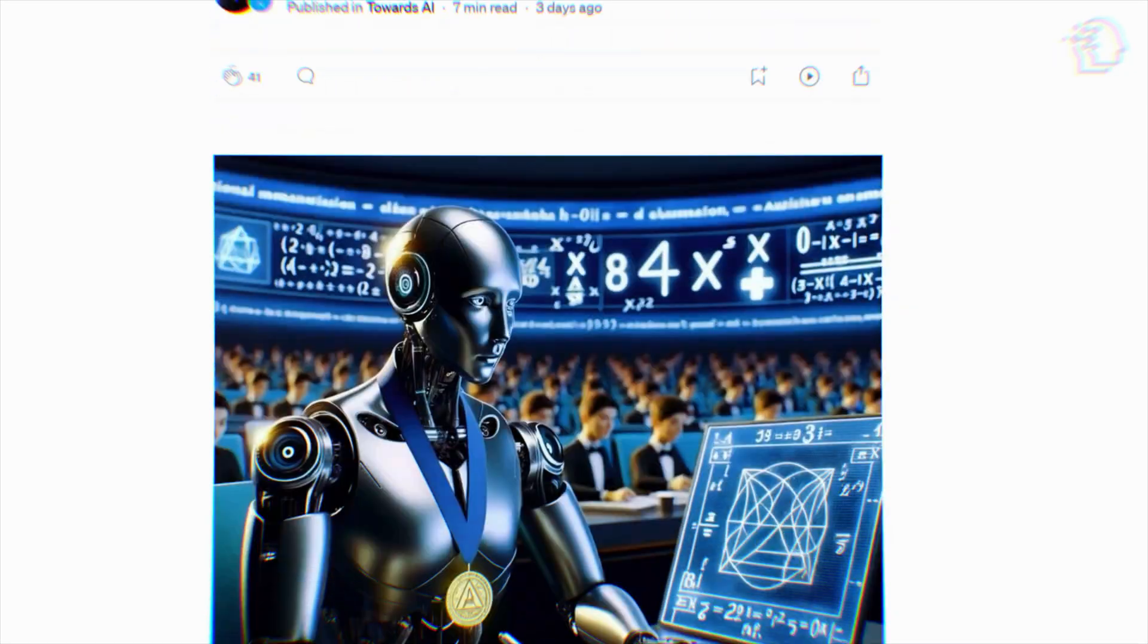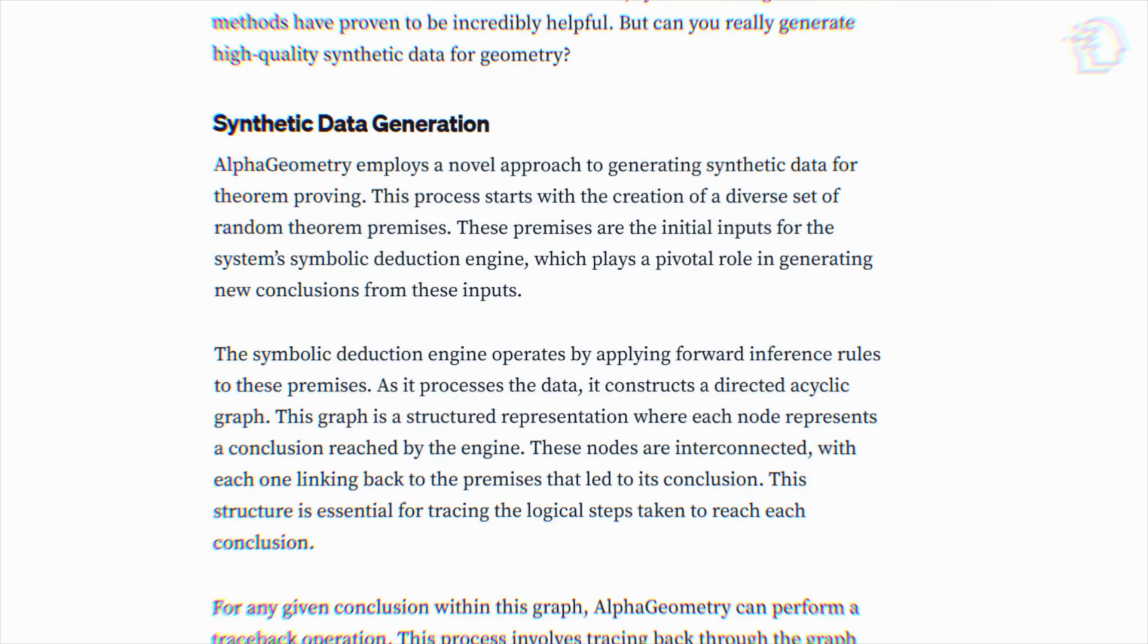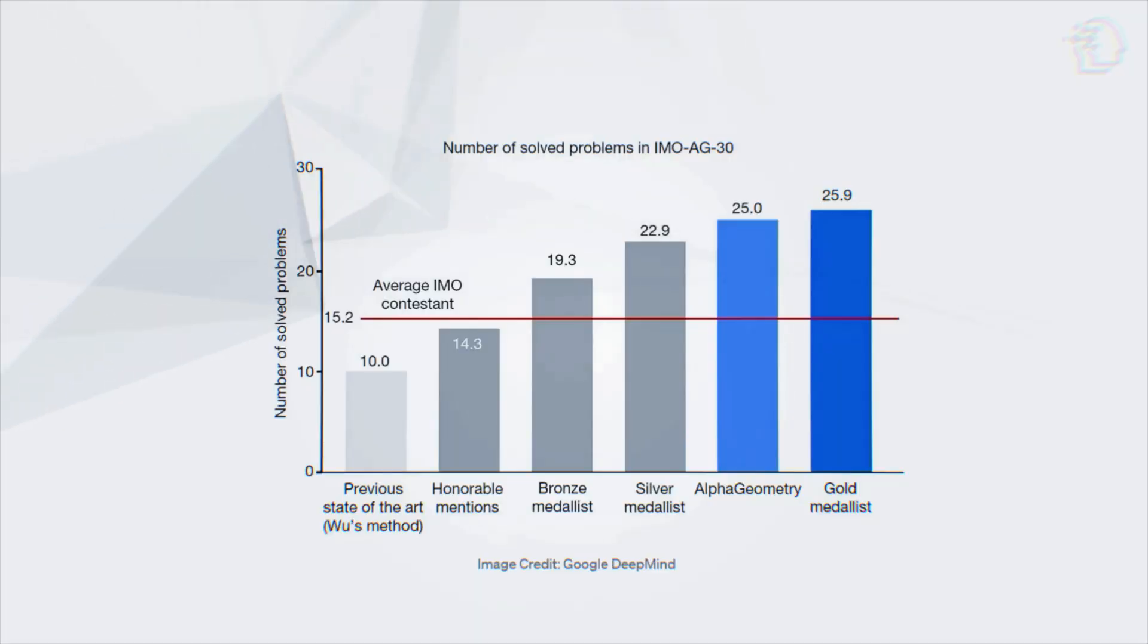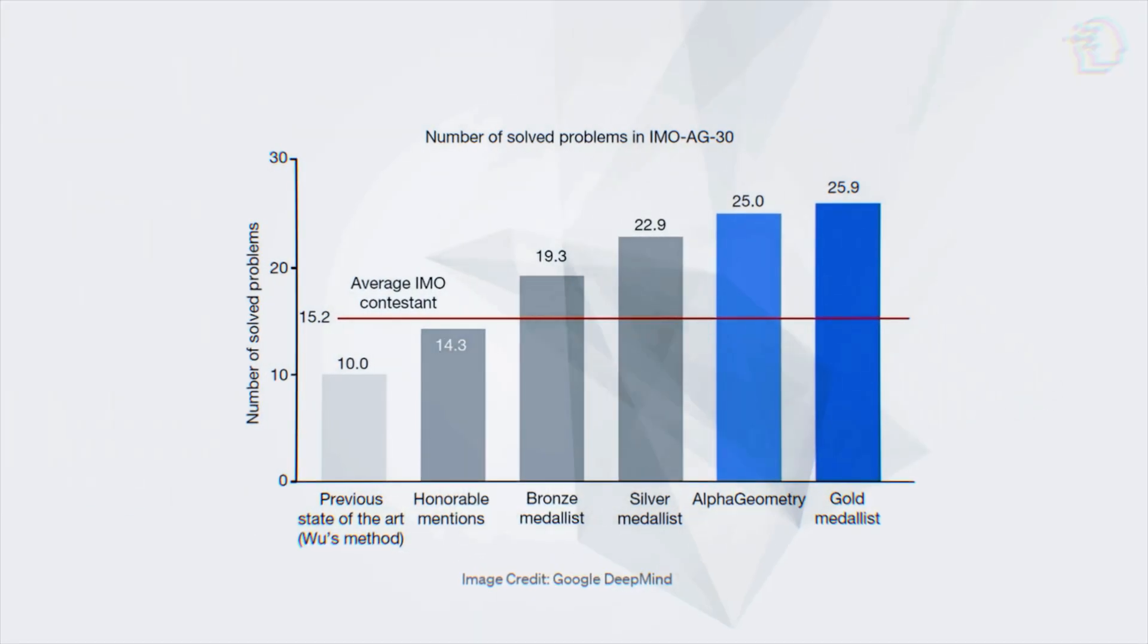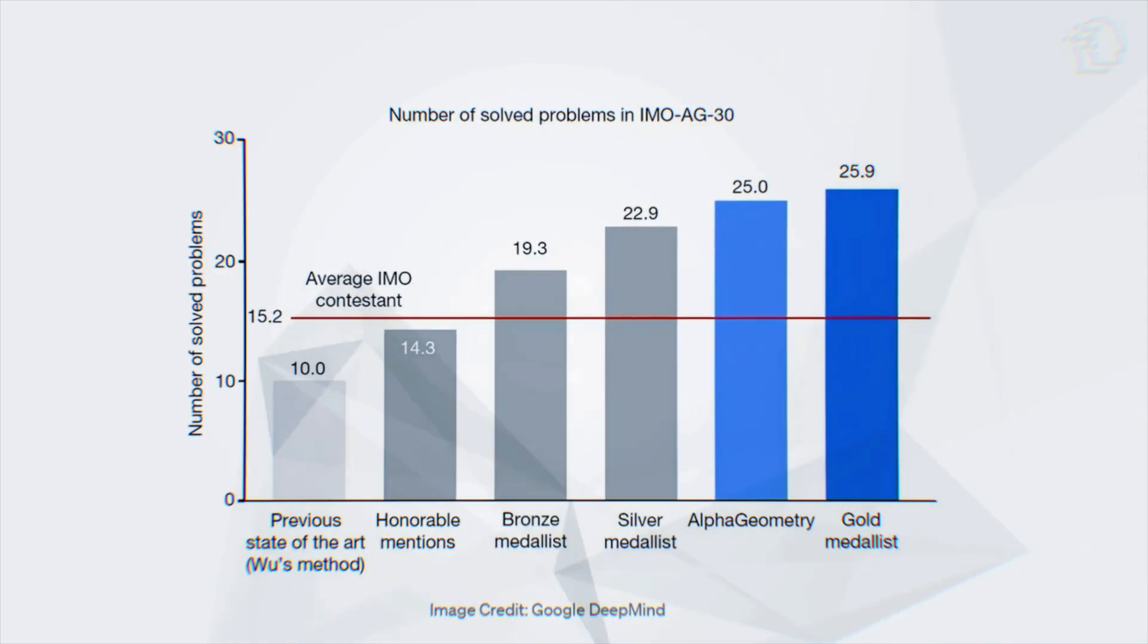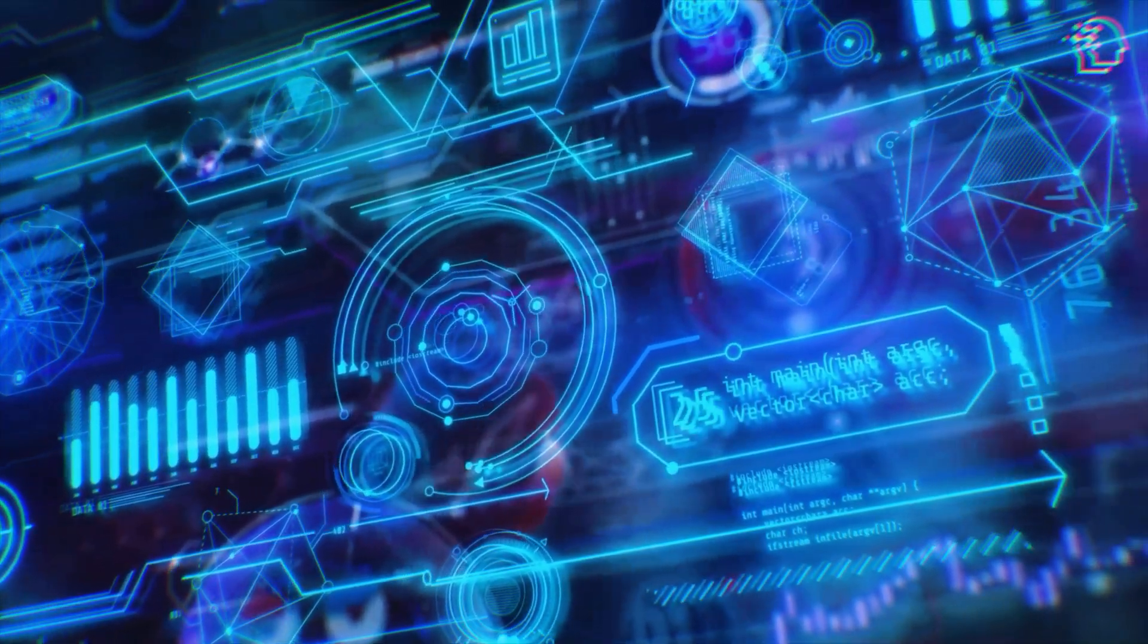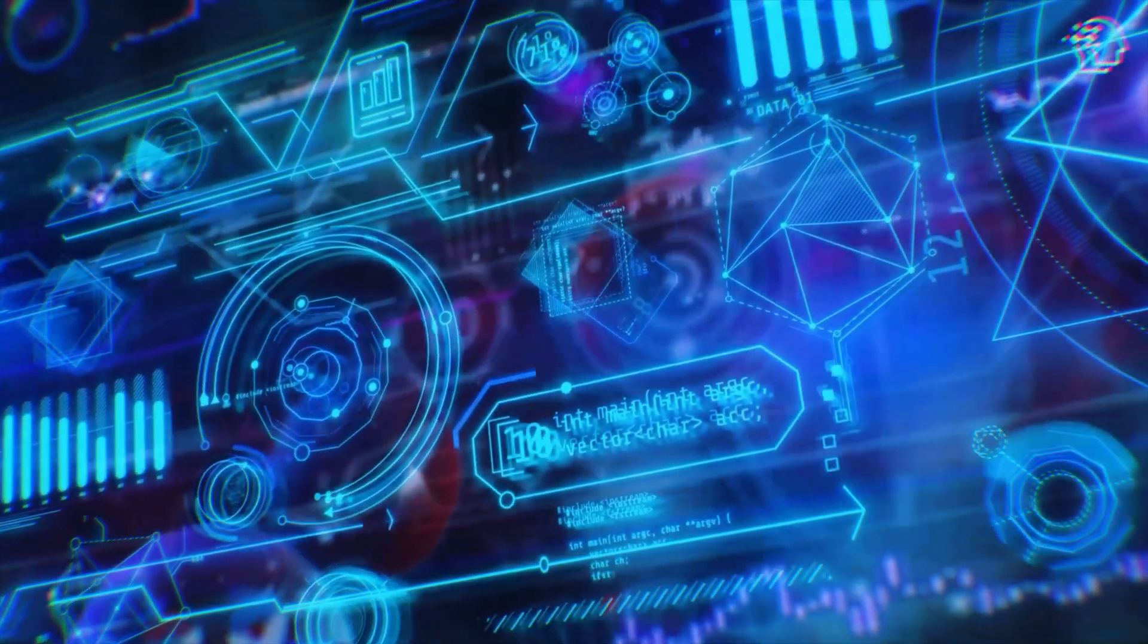In the highly competitive IMO AG30 benchmark test, AlphaGeometry emerged as a superstar. It outperformed 10 different solvers tackling 25 of the 30 complex problems. This achievement wasn't just about solving problems. It showcased AlphaGeometry's ability to optimize computational resources effectively.